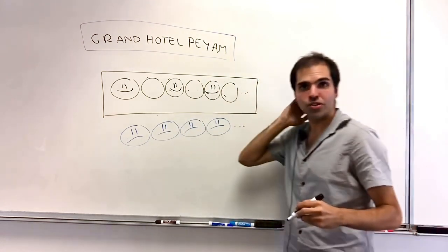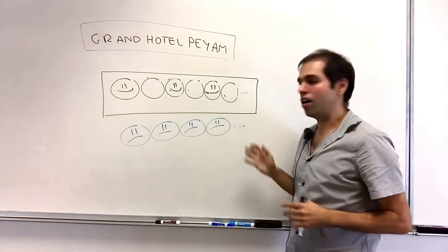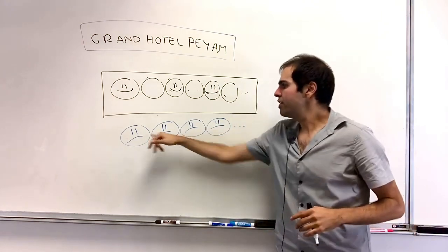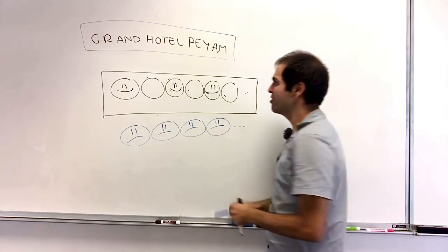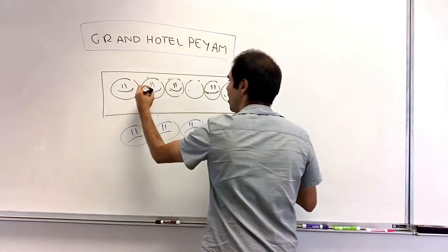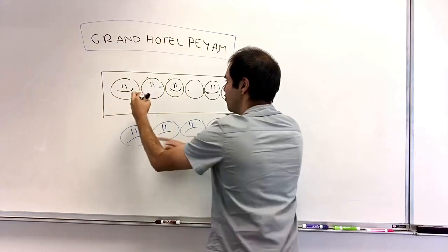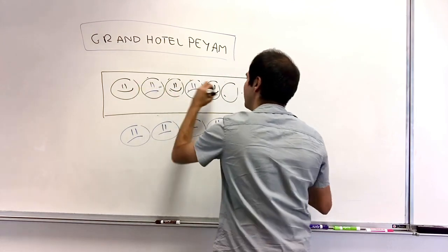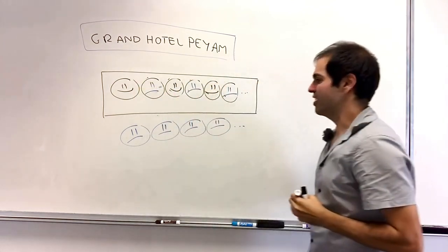So every guest in the original room, they move to an odd-numbered room. And now, the other guest, you can simply put them in an even-numbered room. So this goes to room two. So the first guest goes to room two, then room four, then room six, et cetera.